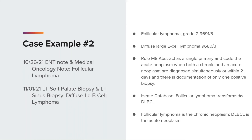As a what-if scenario: if both histologies were found in the same single biopsy with no other biopsies, we would have stopped at rule M4 because they were both non-Hodgkin lymphoma in the same location in the same biopsy.